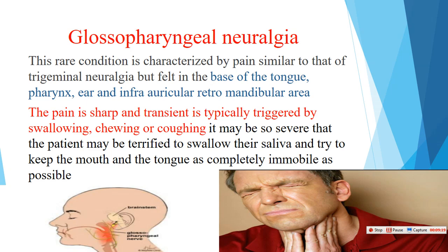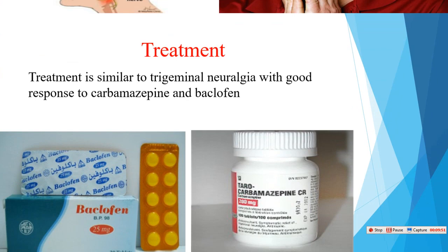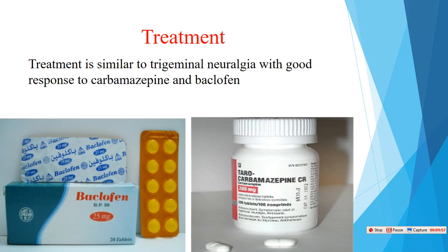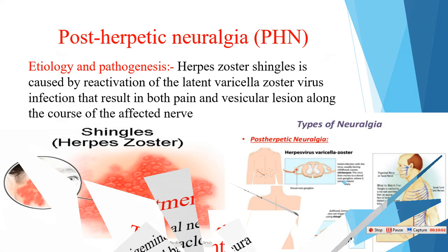The pain presents as shooting pain in the pharyngeal and infraauricular area and the mandible region. The most common cause of this neuralgia is a tumor in the pharyngeal area, or possibly microvascular abnormality where compressed vessels irritate the nerve causing severe shooting pain. Treatment is the same as trigeminal neuralgia — carbamazepine and baclofen.